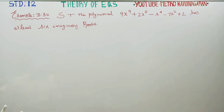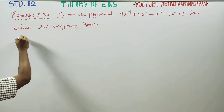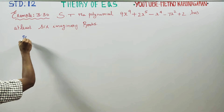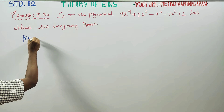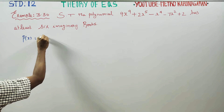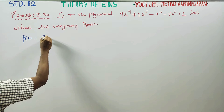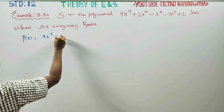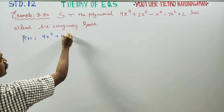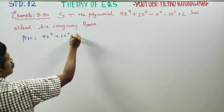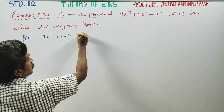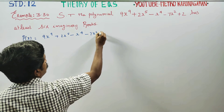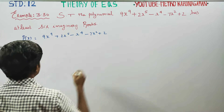Let my polynomial p(x) be: 9x⁹ + 2x⁵ - x⁴ - 7x² + 2.